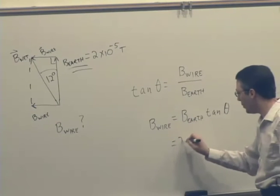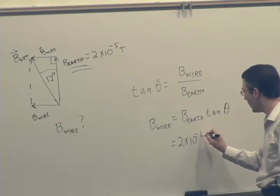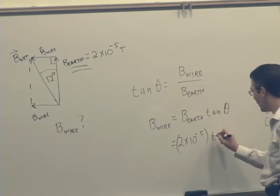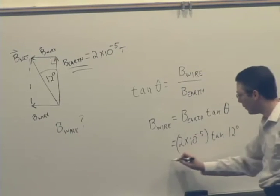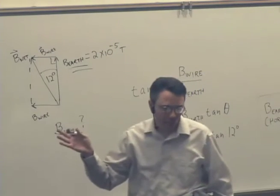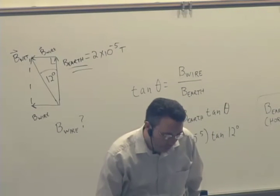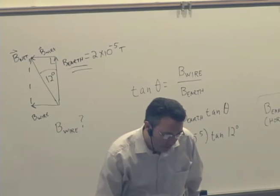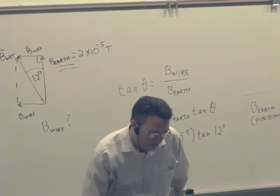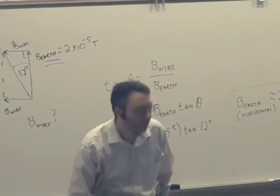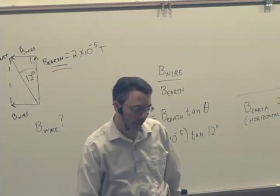So we have 2 times 10 to the minus 5 times the tangent of 12 degrees. What's that give us? Is it 4.3? What's it work out to be? Is it answer 4? Is it really answer 4? Yeah. Okay, 4.3 times 10 to the minus 6.